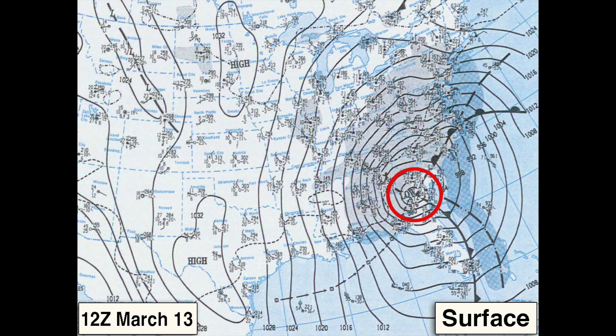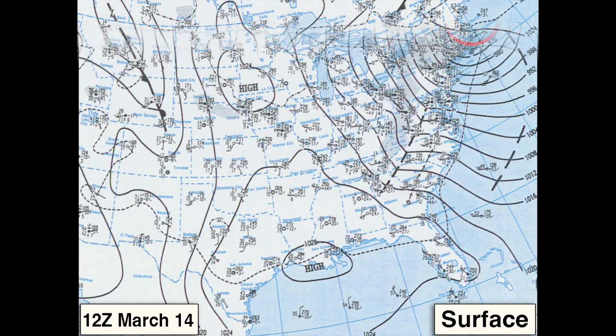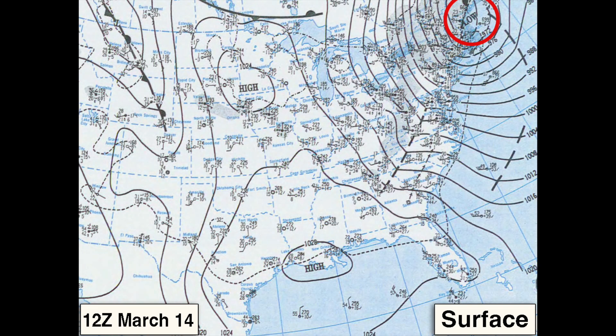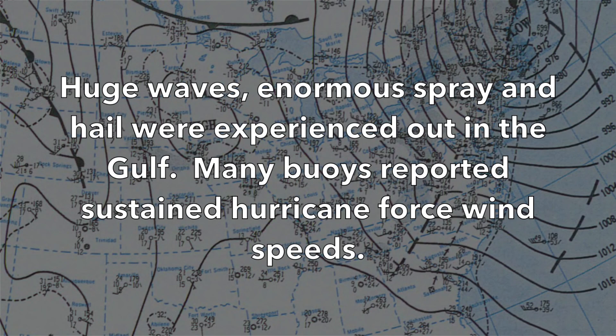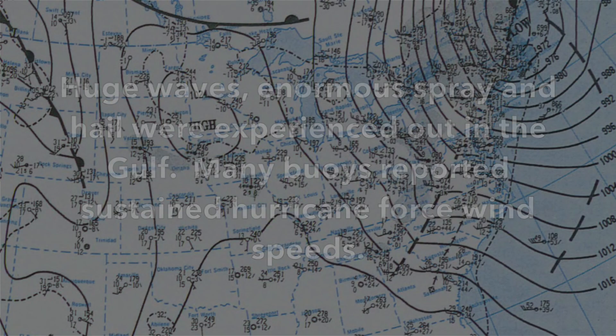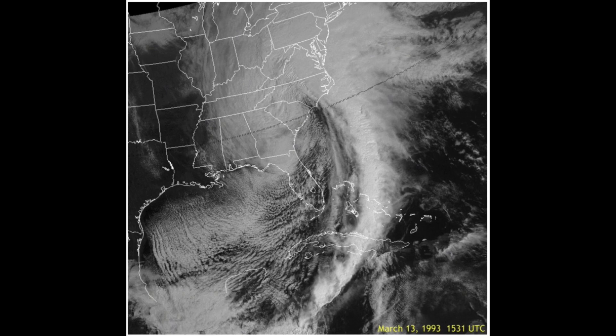These conditions allowed the low to bomb, deepening 30 millibars in 24 hours as it moved up the eastern seaboard. The U.S. Coast Guard reported sea conditions in the Gulf as being like a big washing machine — huge waves, enormous spray, and hail. Many buoys reported sustained hurricane-force wind speeds. The seas were so rough that a 200-foot freighter sank about 70 miles offshore of Fort Myers, Florida.